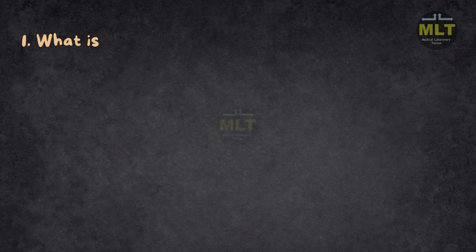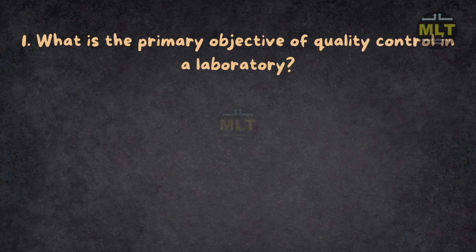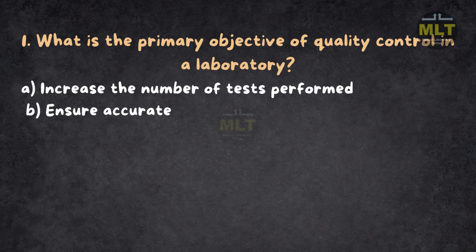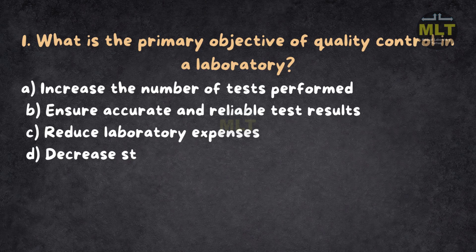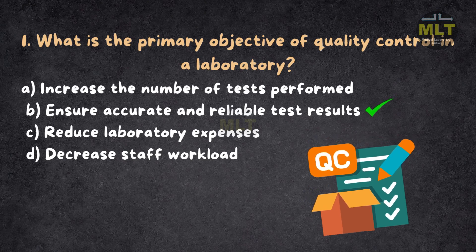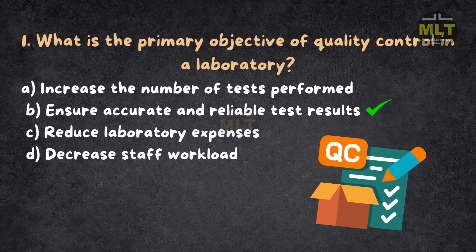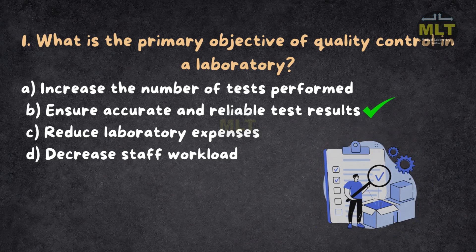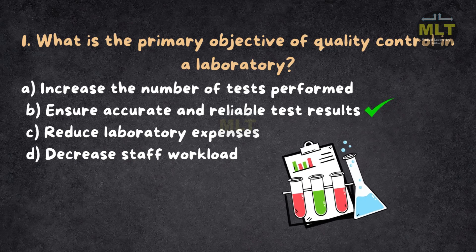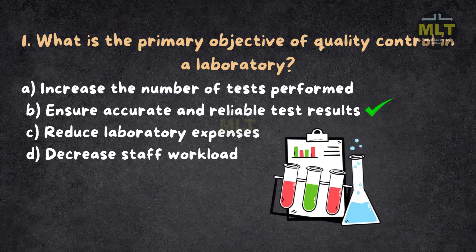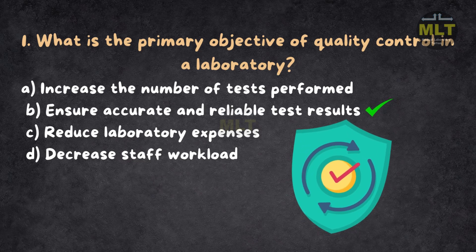Question 1: What is the primary objective of quality control in a laboratory? a. Increase the number of tests performed. b. Ensure accurate and reliable test results. c. Reduce laboratory expenses. d. Decrease staff workload. Correct answer: b. Ensure accurate and reliable test results. The main aim of QC is to ensure consistent accuracy and reliability in test results. It minimizes errors that can affect patient diagnosis and treatment. Increasing test numbers or reducing costs does not directly align with QC goals. Reliable results are essential for maintaining lab credibility.